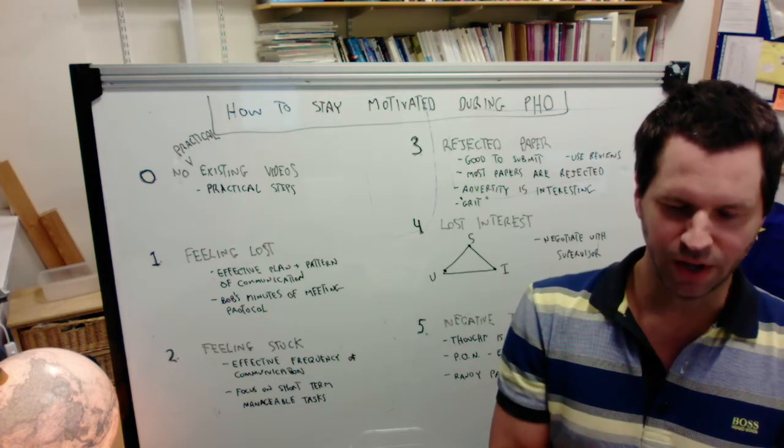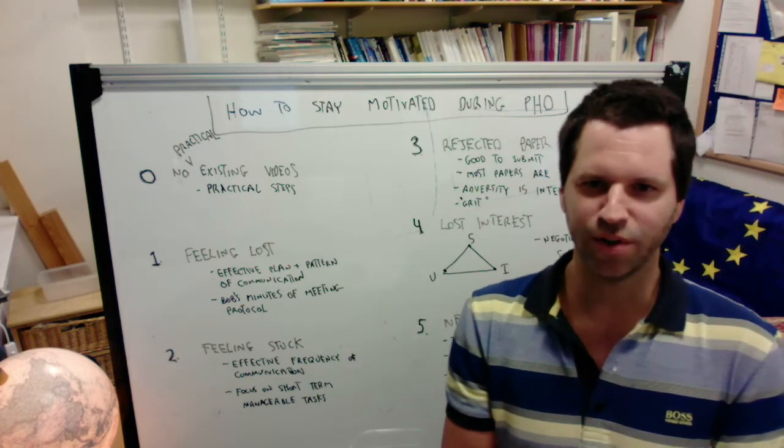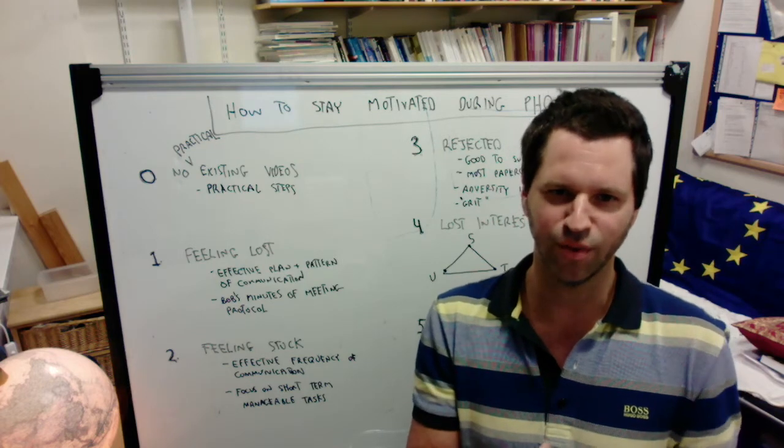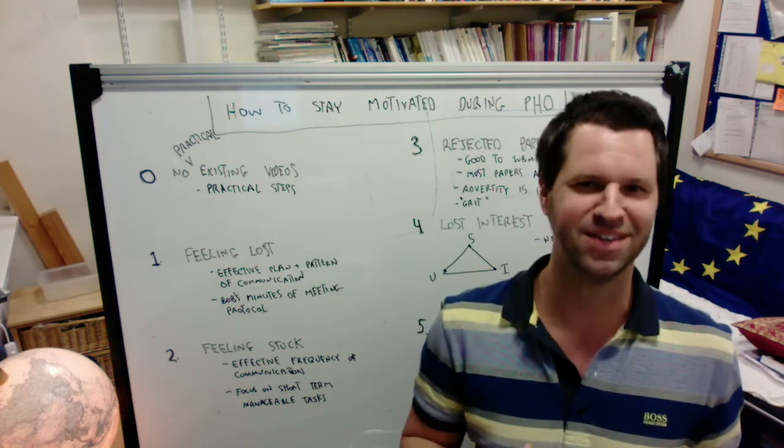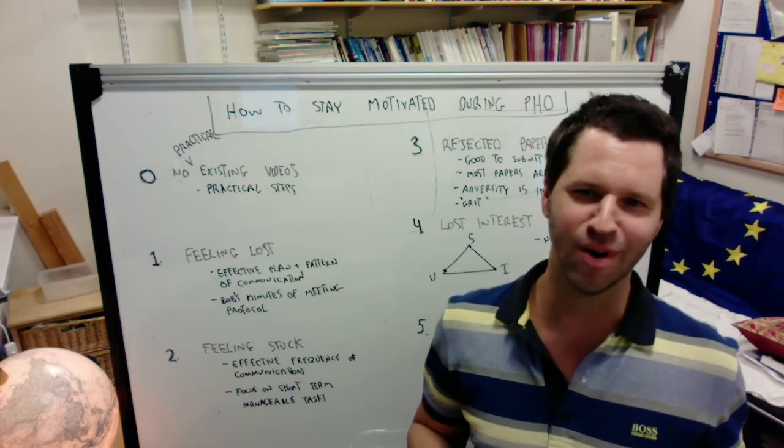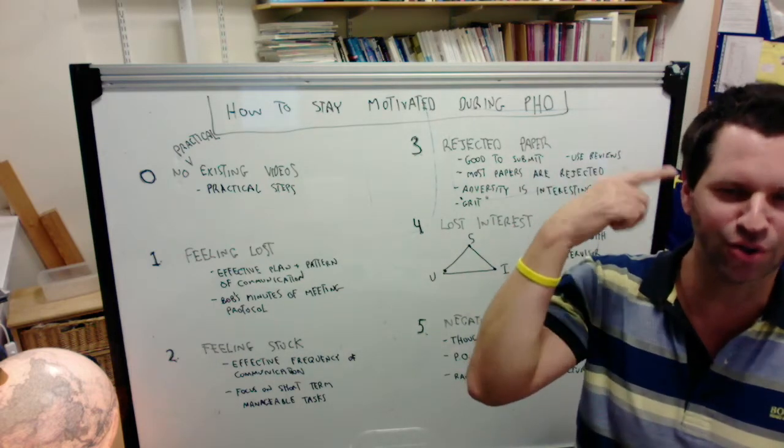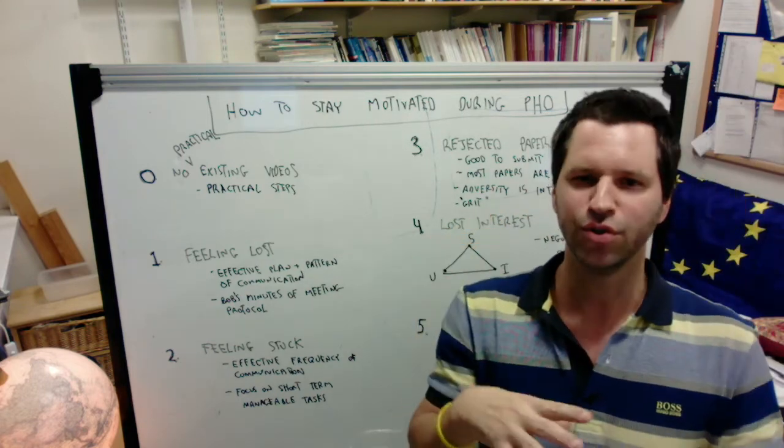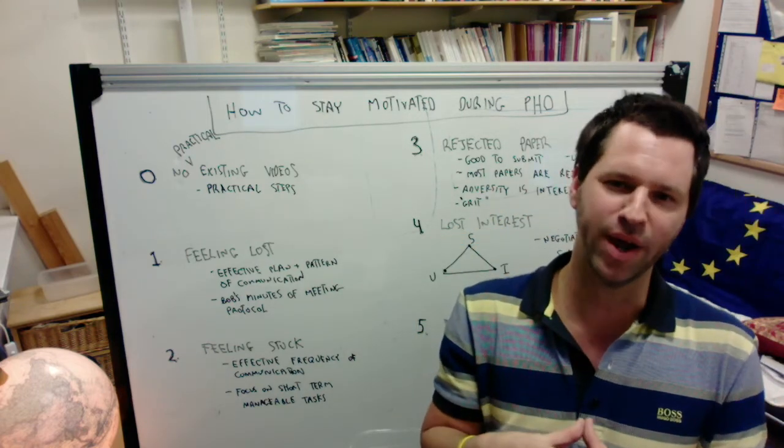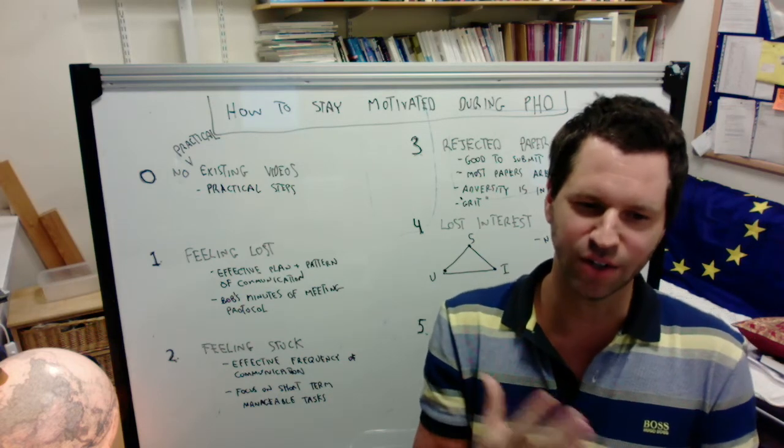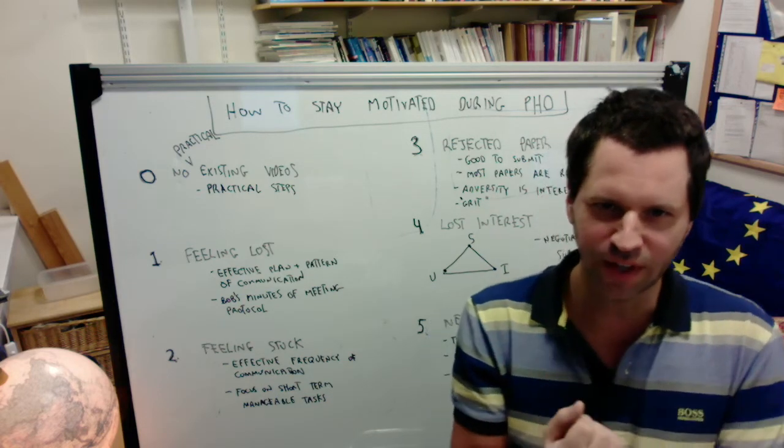When you meet with your supervisor, you want to have a plan about what's going to happen during the meeting. You want to have a special pattern of communication that consistently happens every time. For example, when you leave a meeting, you want to know what to do. So you want a to-do list. You want to extract that information from your supervisor before you leave.